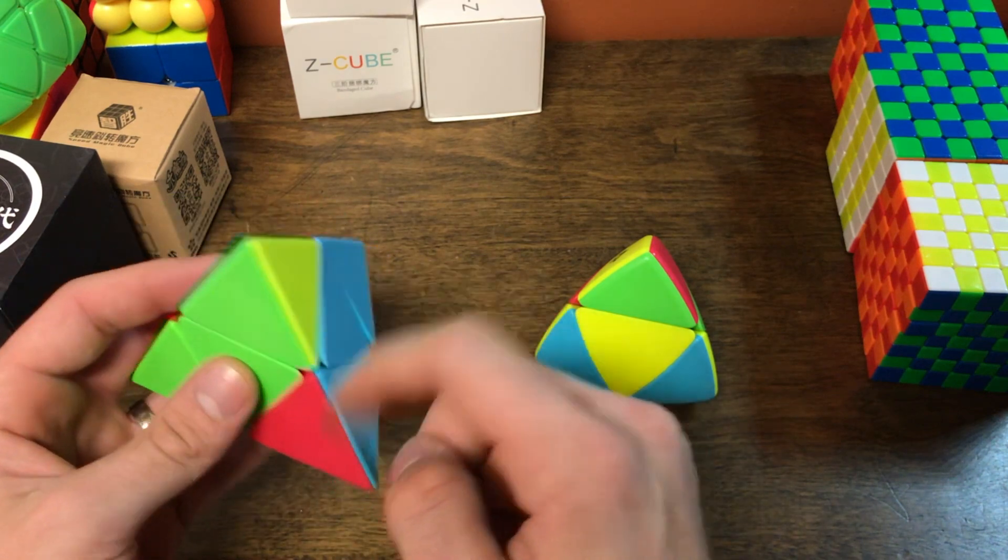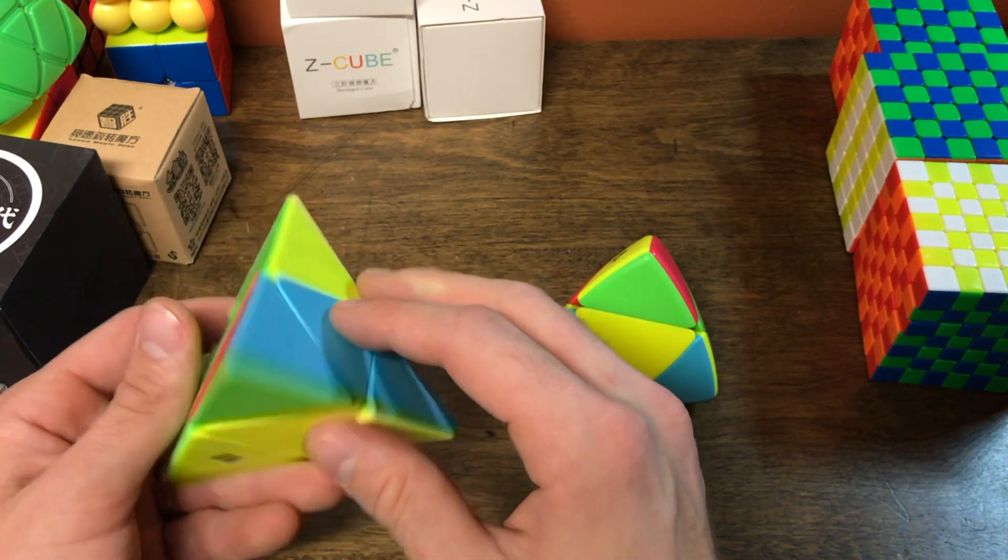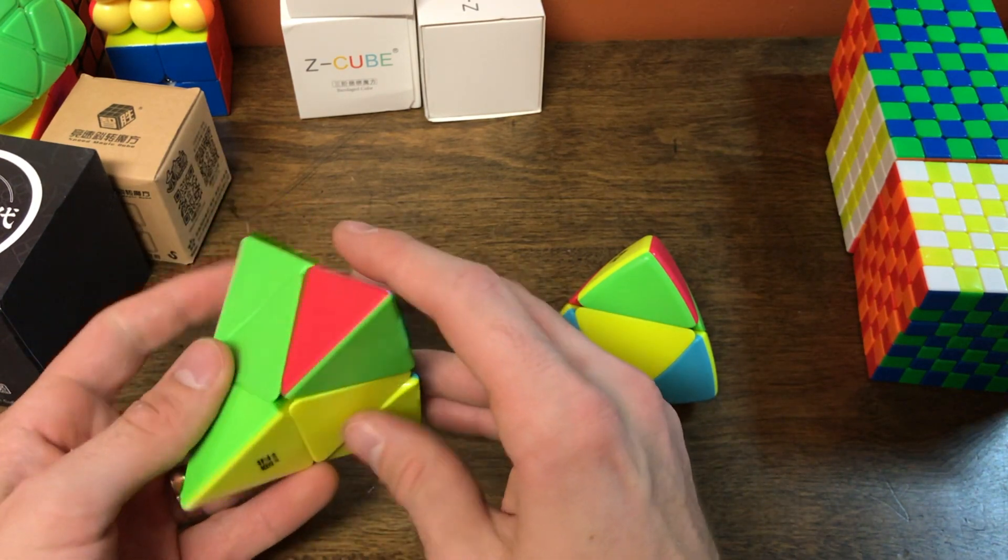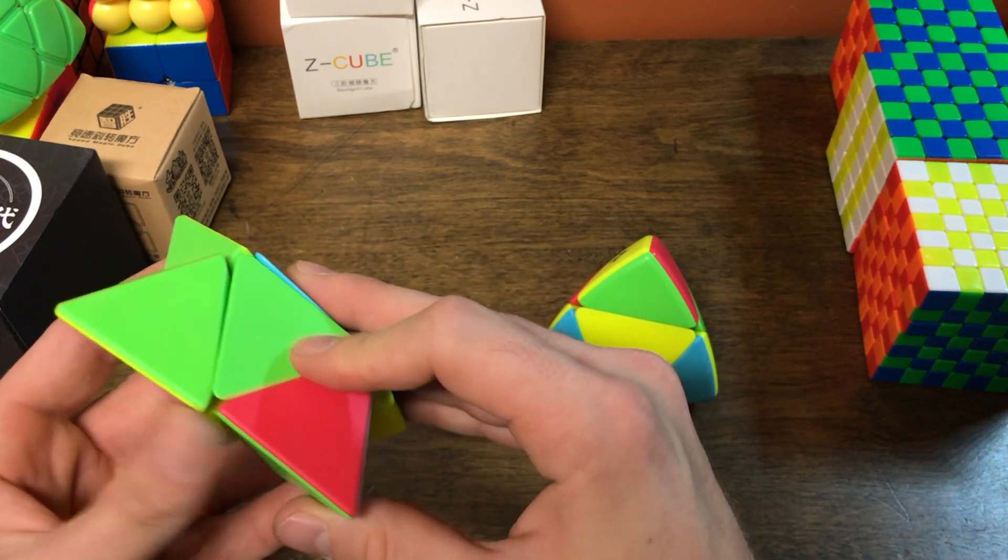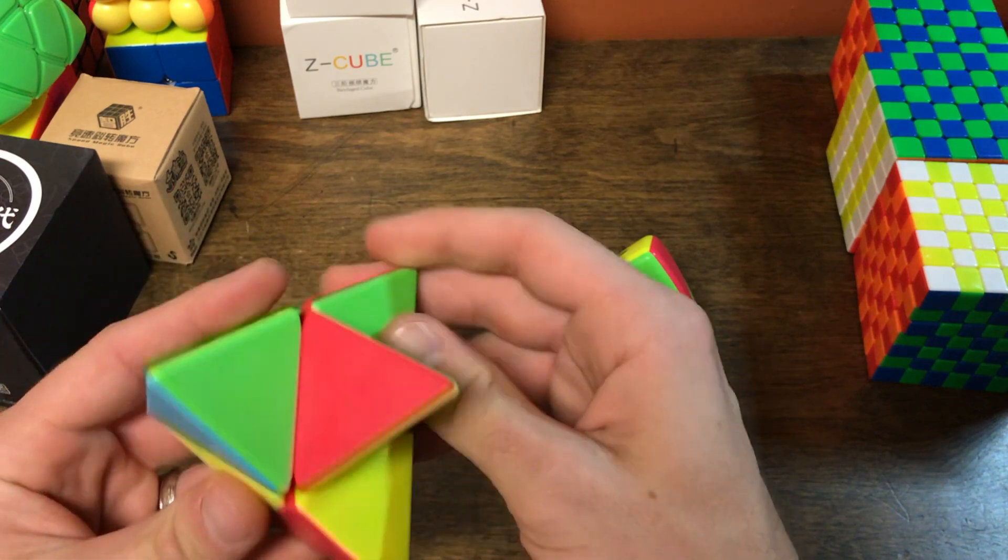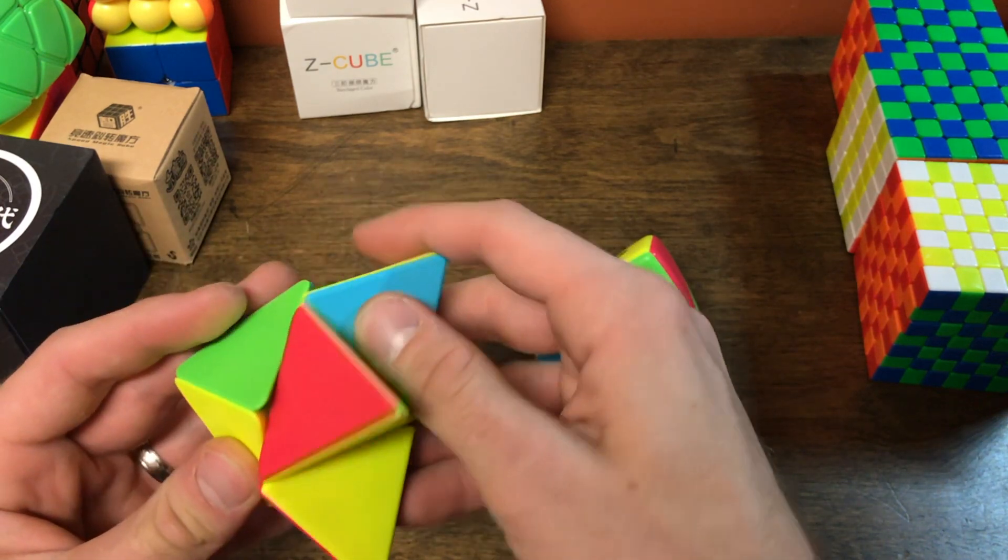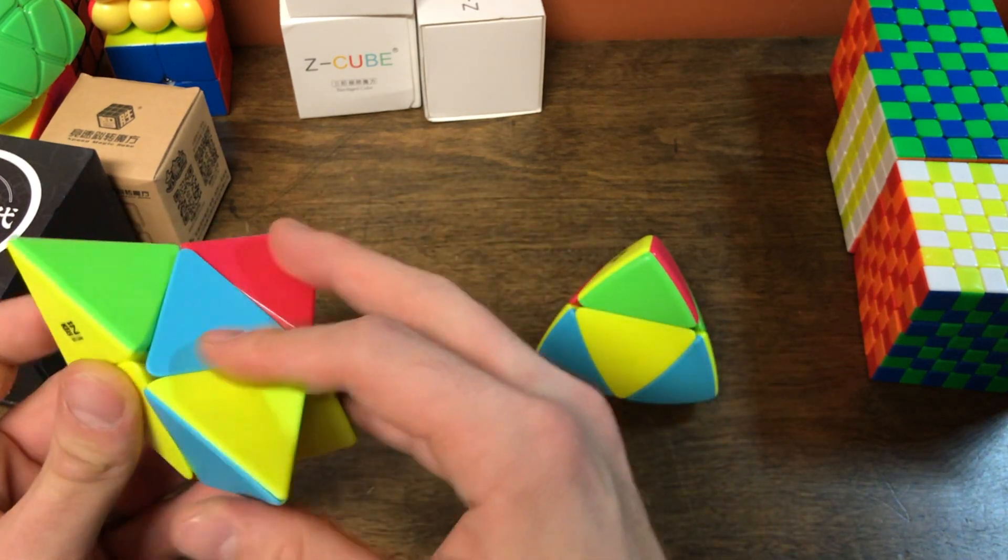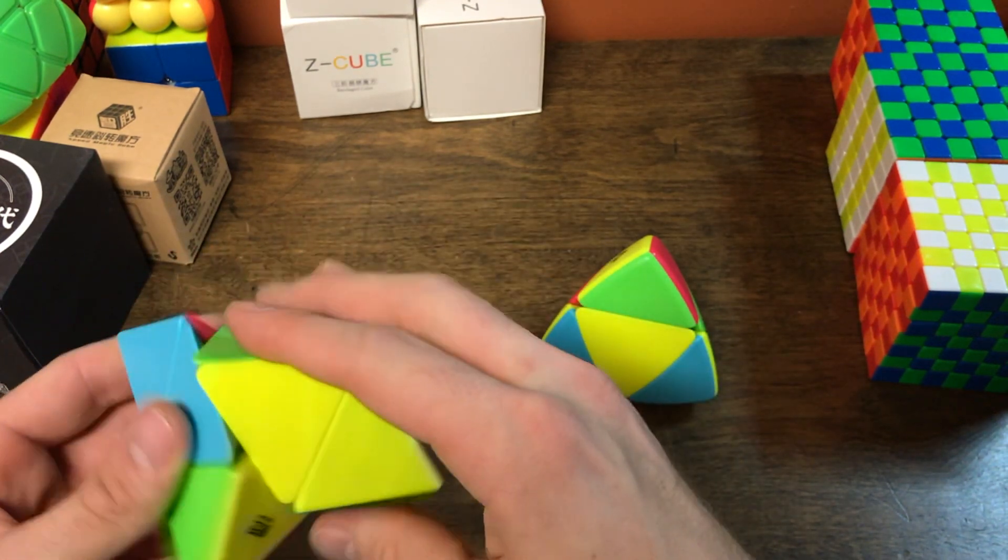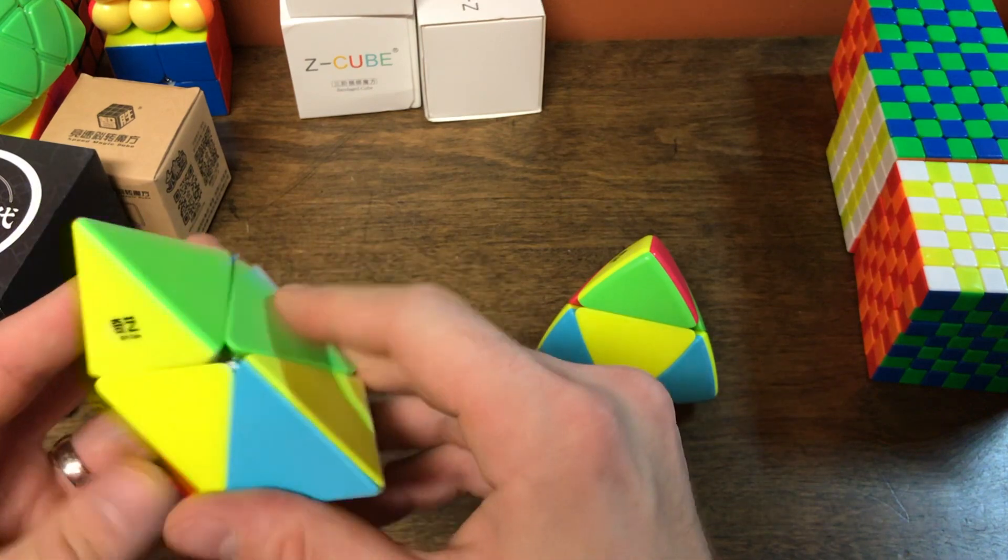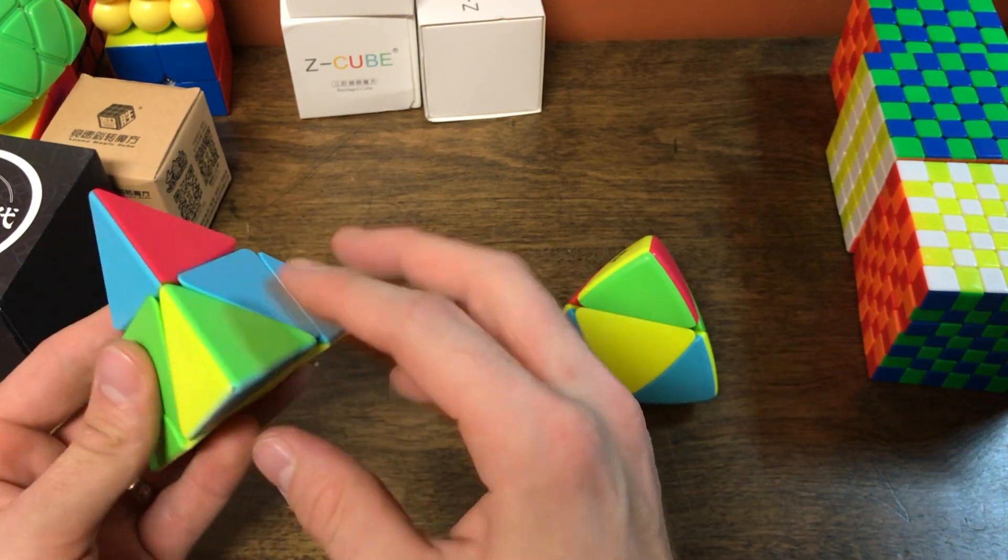Oh, whoops, I did it the wrong way. So these two need to be swapped, which we can use with a Y perm. So if I do... And then we just need to twist these corners.